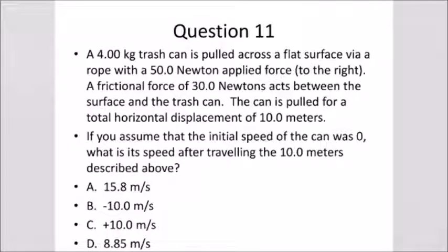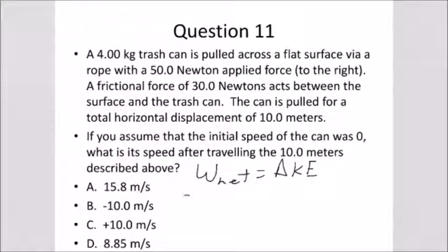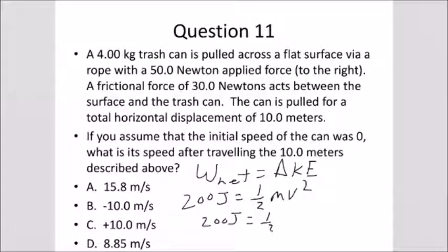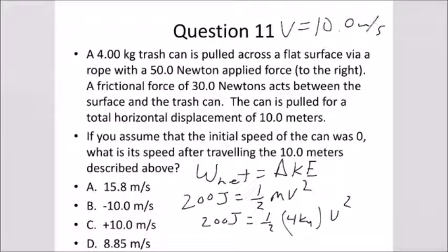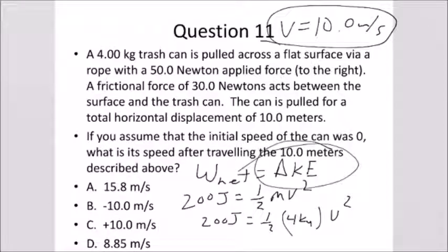Question eleven: if the initial speed of the cart was zero, what is its speed after traveling 10 meters? Net work equals change in kinetic energy. We did 200 joules of net work, which equals the final kinetic energy since we started with zero, so 200 = one-half mv squared. Plugging in mass of 4 kilograms and solving for v, the velocity comes out to be 10 meters per second. The work we did caused an increase in speed and therefore an increase in kinetic energy.